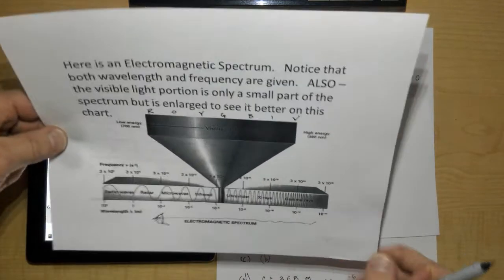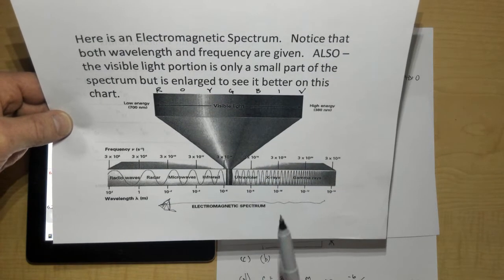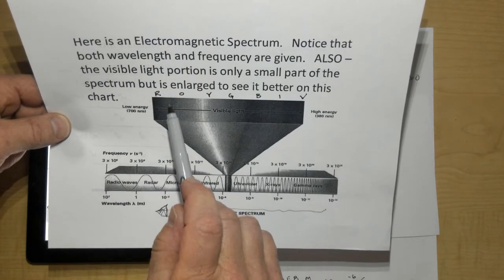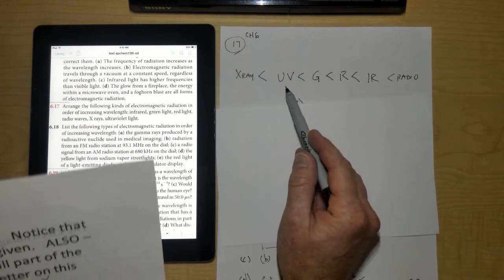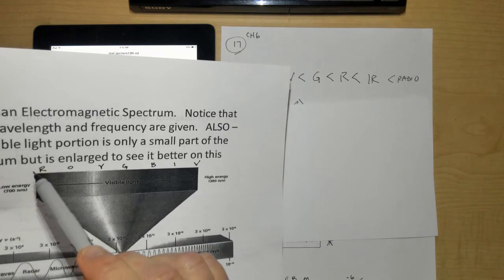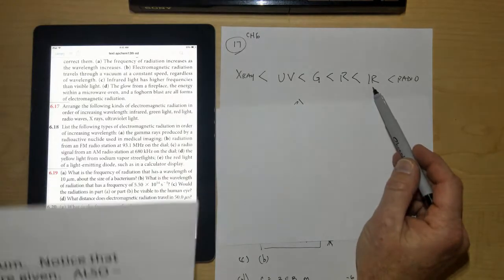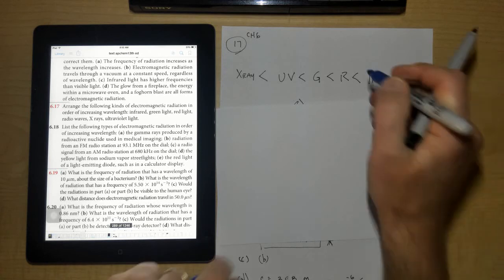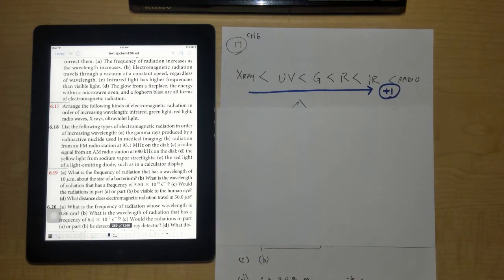Looking at the shortest wavelength to the longest: the shortest are obviously the x-ray area. The distance between waves is the wavelength. Then there's ultraviolet, and looking at the colored chart, violet has a shorter wavelength than red, then you get into infrared, microwave, and radio waves. So the order would be: x-ray, UV, green, red, infrared, and then radio waves at the end.